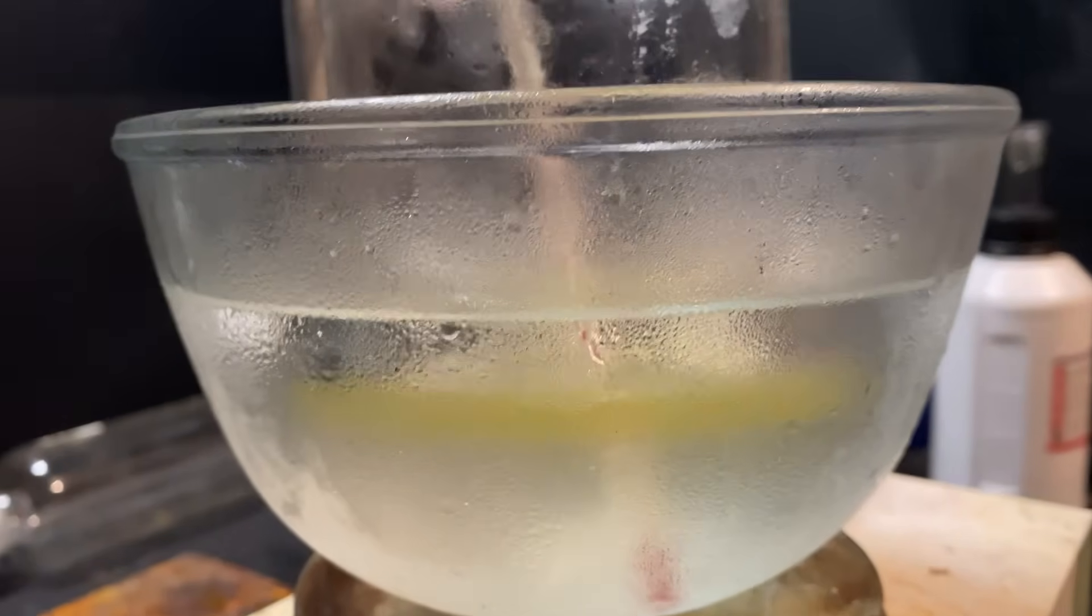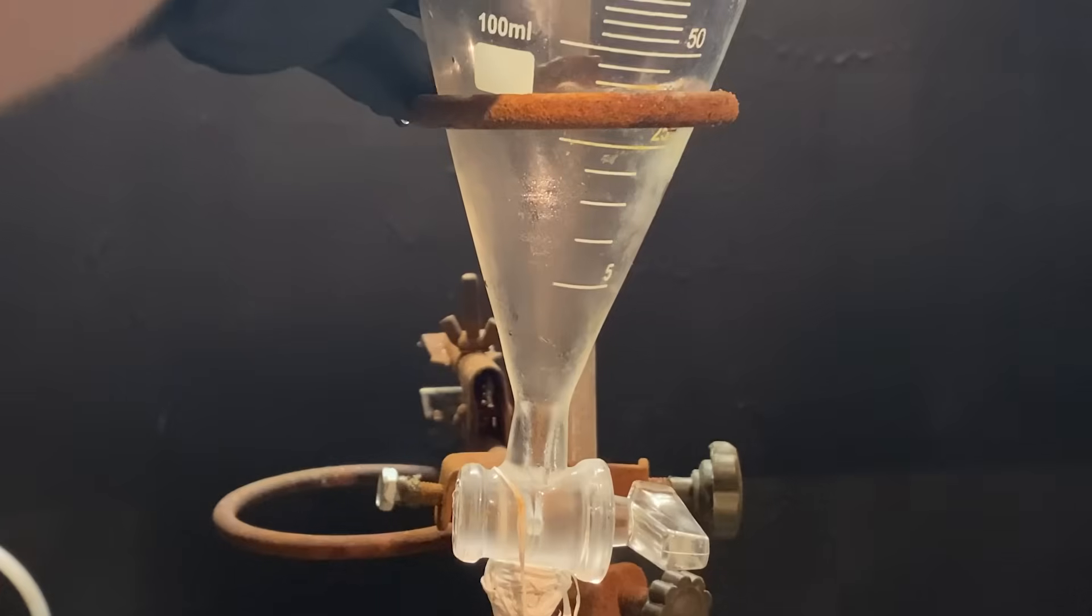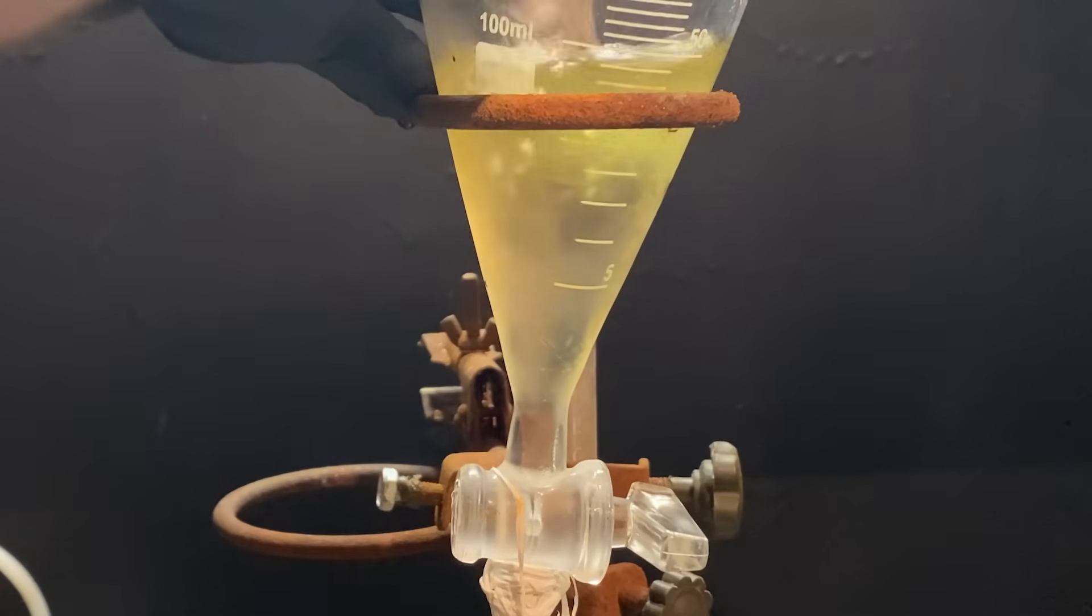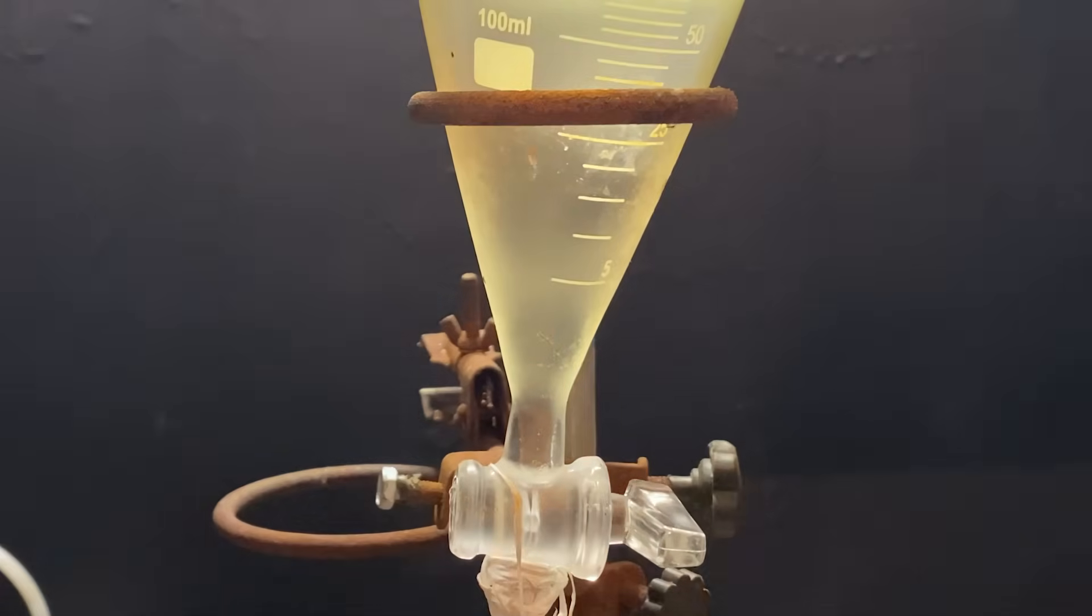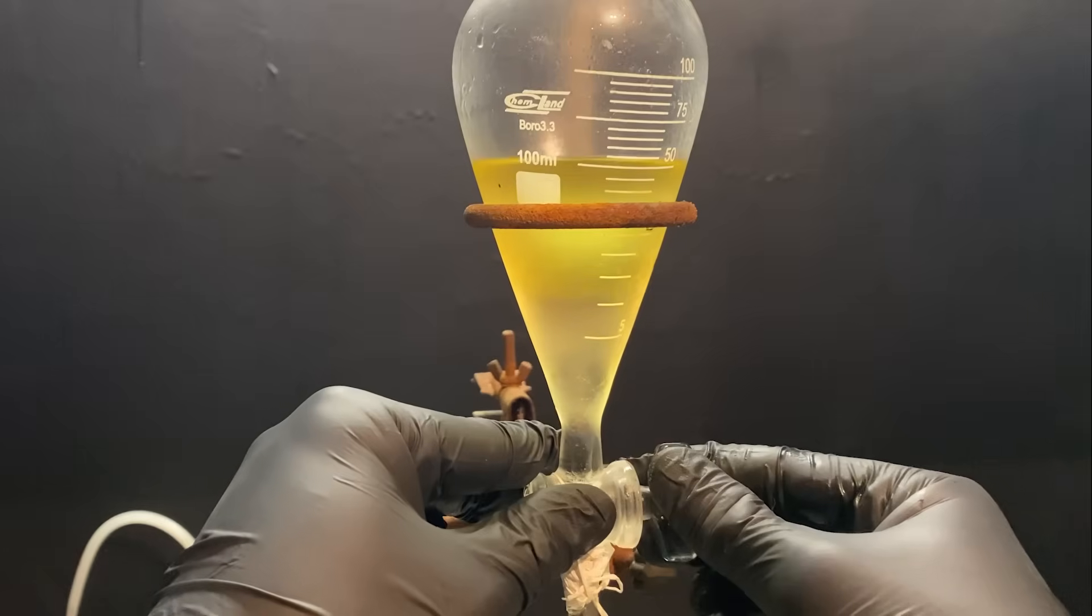After the reaction is finished, an orangish layer is on the top. And that's all the isopropyl nitrite. Once everything was done, I've transferred the reaction mix into a separatory funnel. Here, you can clearly see the two layers. I've quickly drained away the water layer, and I've left the organic intact.